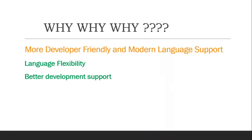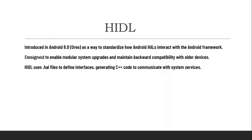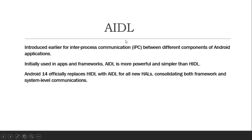Those were the six reasons why Google decided to completely eliminate HIDL and bring in AIDL. Going through all these points, it definitely makes the decision clear. To briefly recap: HIDL was introduced in Android 8 (Oreo) as a way to standardize how Android HALs interact with the Android framework, designed to enable modular system upgrades and maintain backward compatibility. HIDL uses dot HAL files to define interfaces and generates C++ code to communicate with other system services.